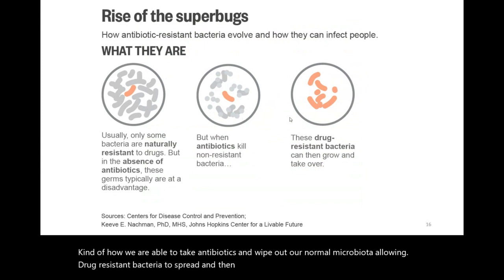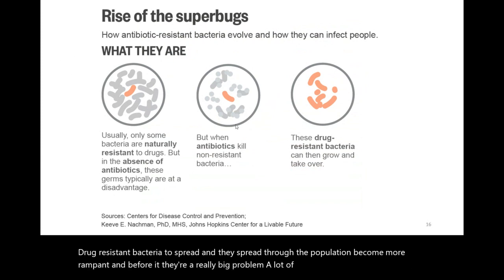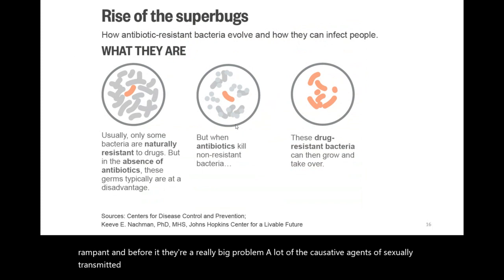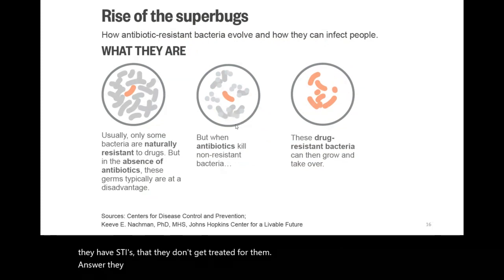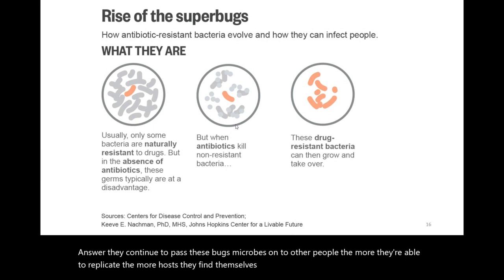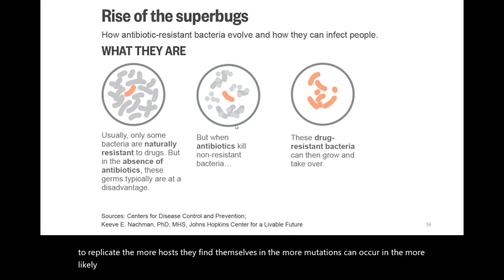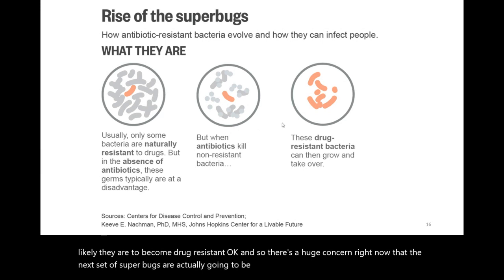Drug-resistant bacteria spread through the population and become more rampant. Many causative agents of sexually transmitted infections are now potential superbugs, because so many people don't know they have STIs and don't get treated. They continue to pass these microbes to others, and the more bacteria replicate across many hosts, the more mutations can occur and the more likely they are to become drug resistant. There is a huge concern that the next set of superbugs will be the pathogens that cause STIs.